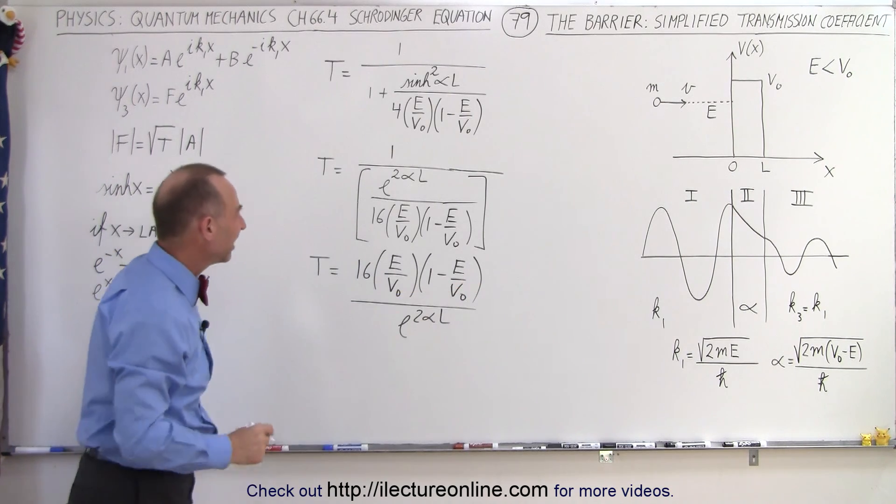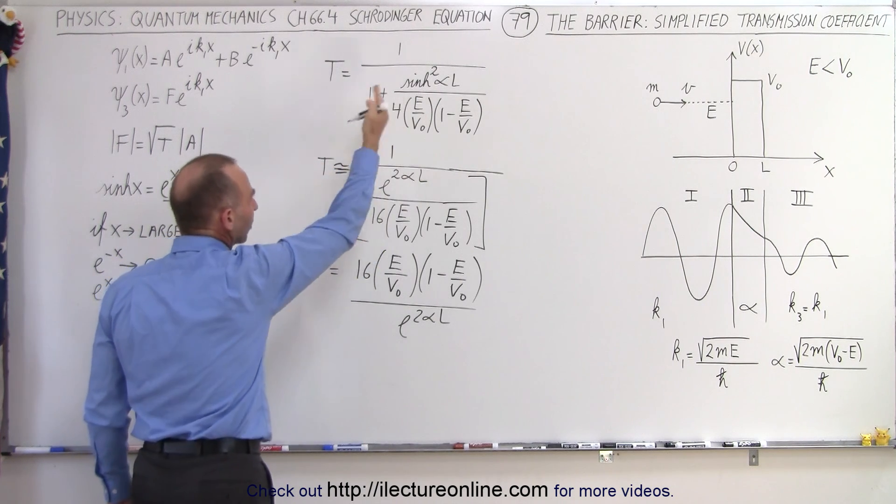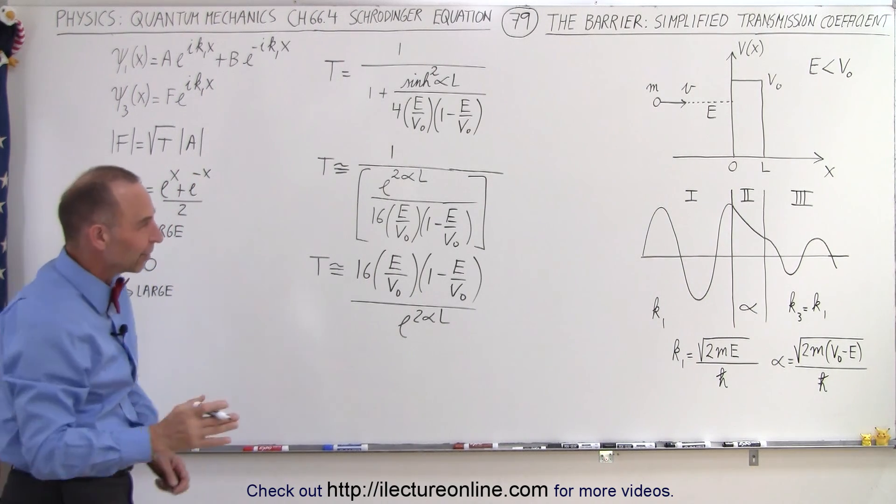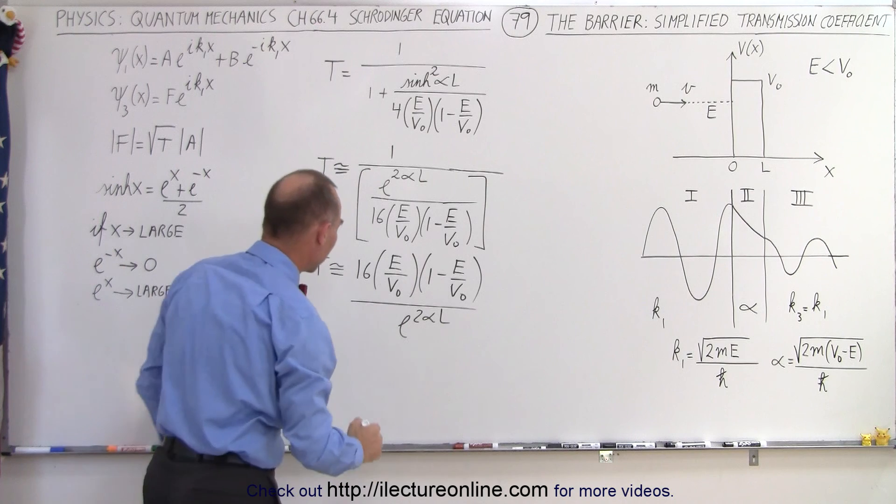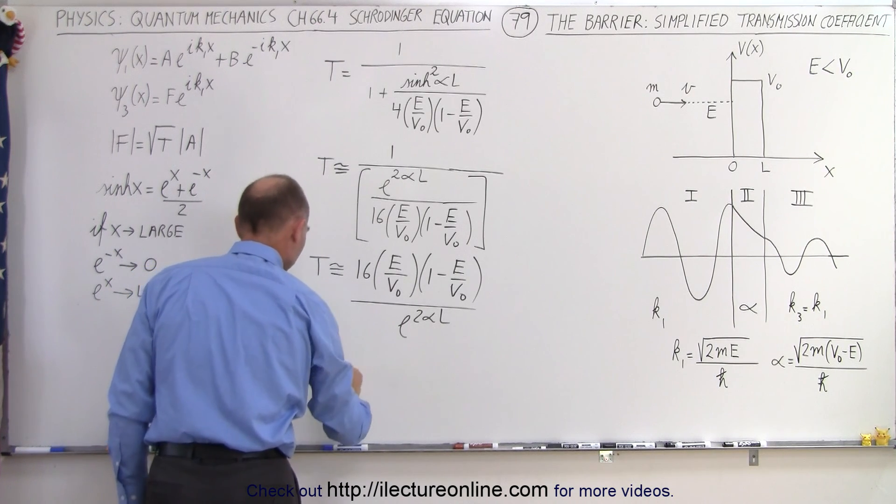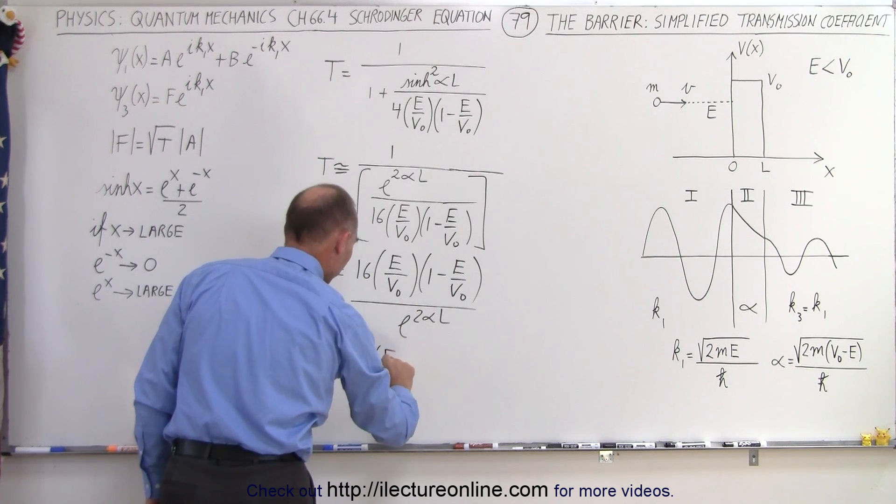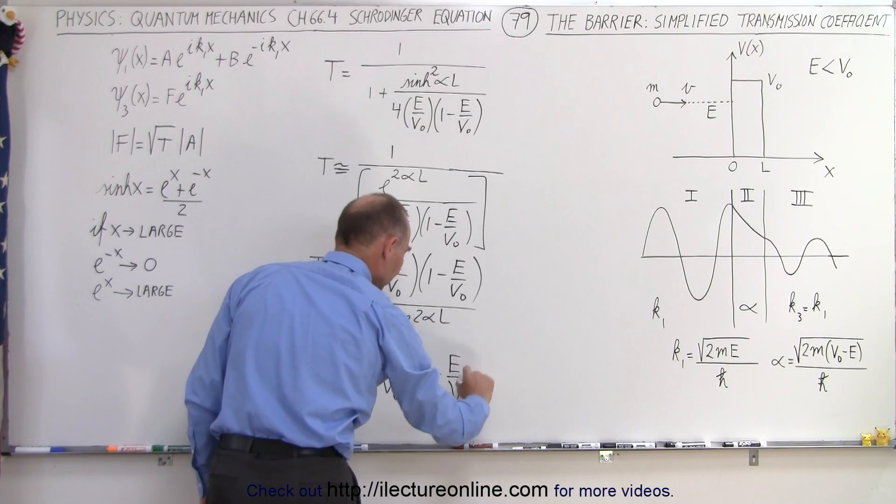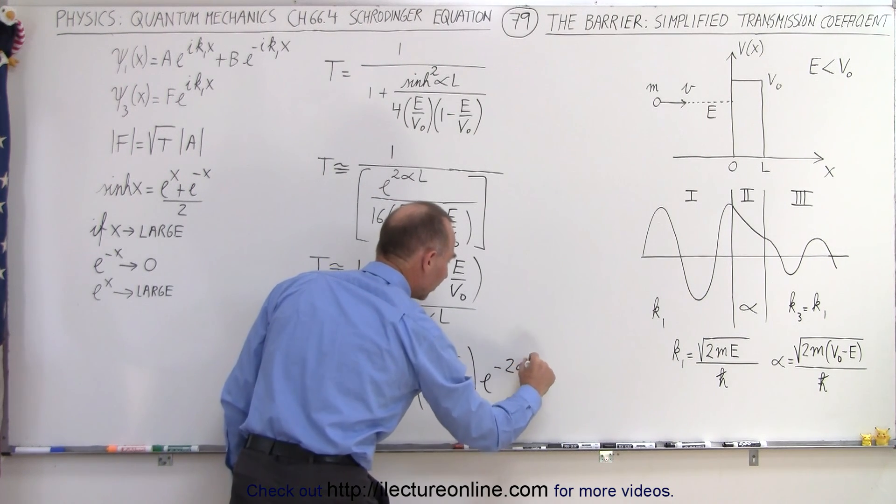If we want to bring this to the numerator, what we should do is say this is approximately equal to, because we're making some minor changes here, which may or may not be relevant depending upon the size of alpha times L. But now when we bring this to the numerator, make that into a negative exponent, we can say that the transmission coefficient is approximately equal to 16 times the ratio of the energy of the particle divided by the potential of the barrier, times 1 minus that same ratio. And then here this becomes an exponential decay function, e to the minus 2 alpha L.